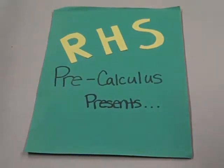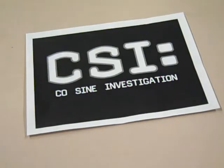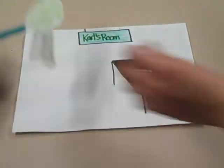Redmond High School Pre-Calculations. Cosine Investigations. Carl can't solve the SAS triangle.